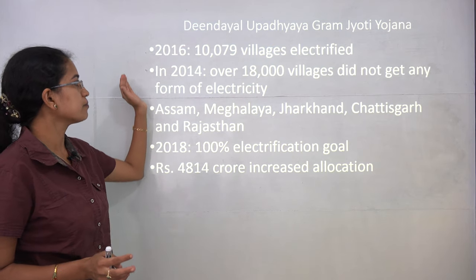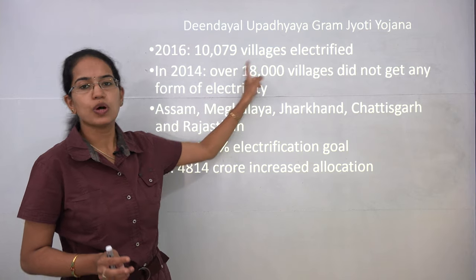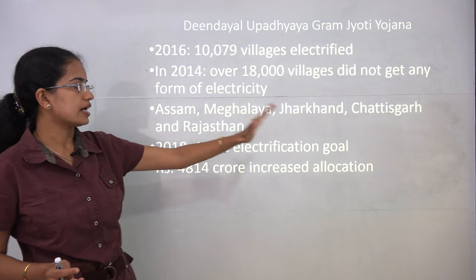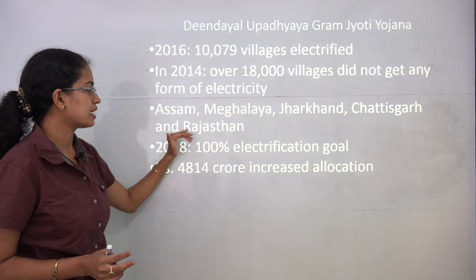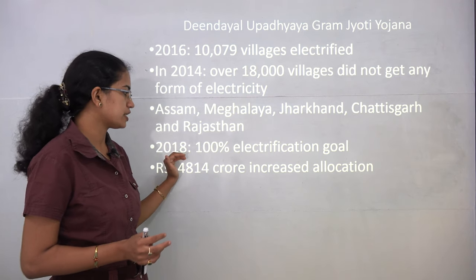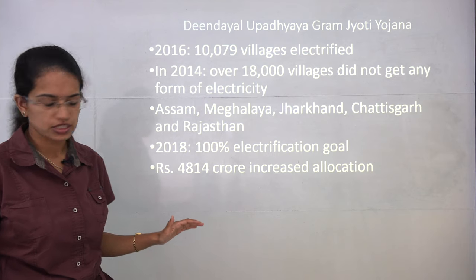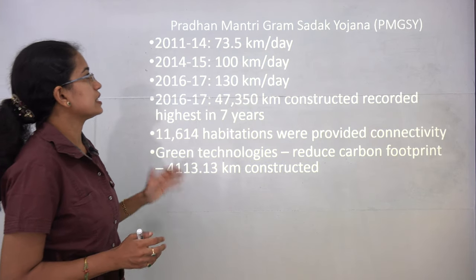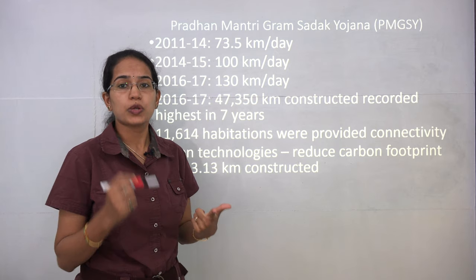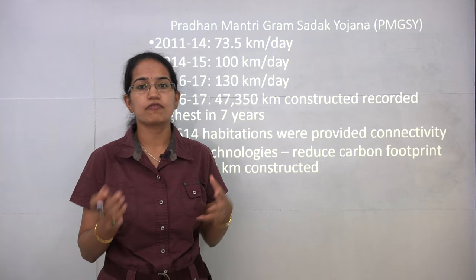Nearly 18,000 villages with no form of electricity have been identified. The major focus will be around these villages. Assam, Meghalaya, Jharkhand, Chhattisgarh, and Rajasthan are the most affected areas. The aim is to achieve 100 percent electrification in rural areas by 2018.